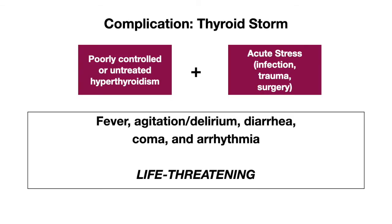Now let's talk about a complication of Graves' disease known as thyroid storm — this is high yield for the boards. This is a life-threatening condition; you can think of it as a severe form of thyrotoxicosis. The recipe for disaster is poorly controlled or untreated hyperthyroidism plus some form of acute stress, whether it's infection, trauma, or surgery. In cases of thyroid storm, patients will be acutely ill with fever, agitation or delirium, diarrhea, possible coma, and arrhythmia. This condition is life-threatening, so it is imperative that a patient receives immediate treatment.